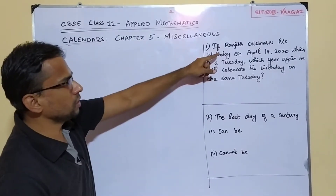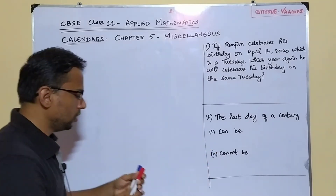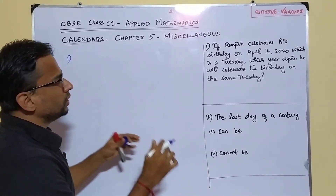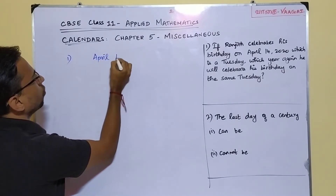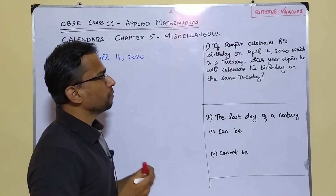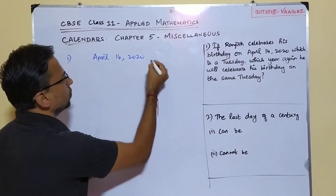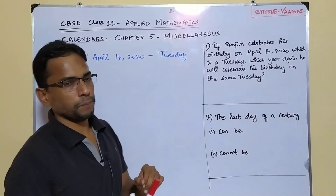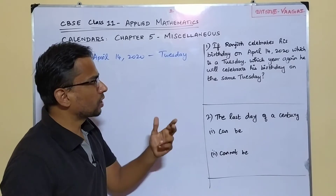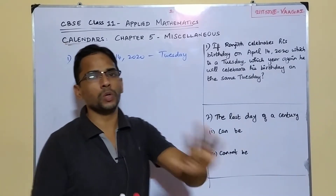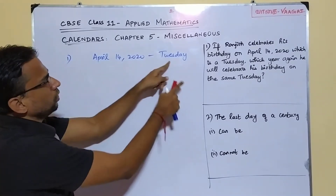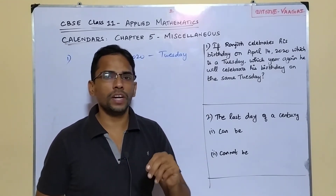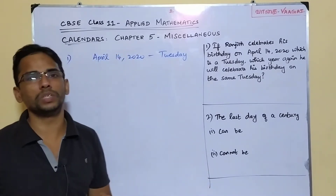In 2020, Ranjit is celebrating his birthday on April 14. It is clearly given that it is a Tuesday. The question asks us to find in which year in the future he will again celebrate his birthday on the same Tuesday — that is, when April 14 falls on a Tuesday once more.